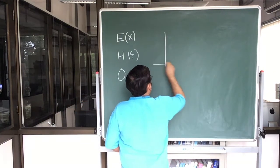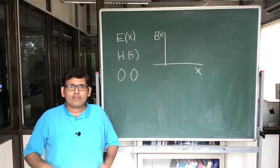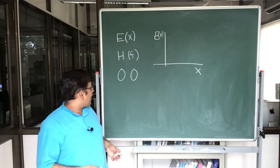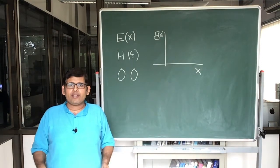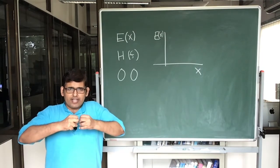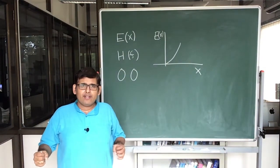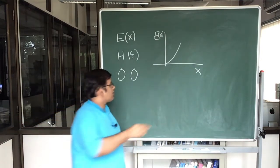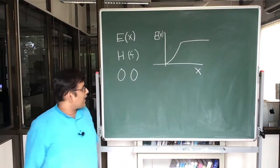I can plot interaction energy versus x by computing force and following the same procedure. What would you imagine getting when two molecules are interacting? If I pull them apart, I will find some force — initially it will be difficult to break the bond. So the energy will increase, and after some time, the bond could break. Once the bonds are broken, there is no energy; they are free to move anywhere, so the energy becomes constant.